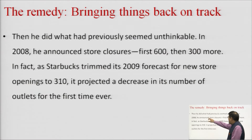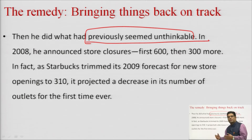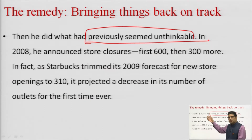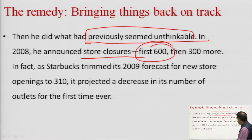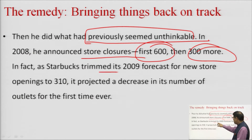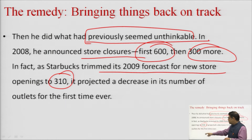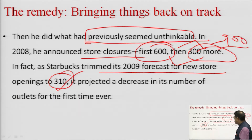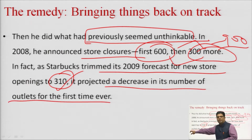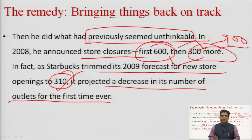Bringing things back on track, Howard Schultz did what had previously seemed unthinkable. He announced store closures — first closing 600 stores and then 300 more, totaling around 900. Starbucks also trimmed its 2009 forecast for new store openings to only 310. It was the first time ever that Starbucks had projected a decrease in its number of outlets and had its growth rate cease.